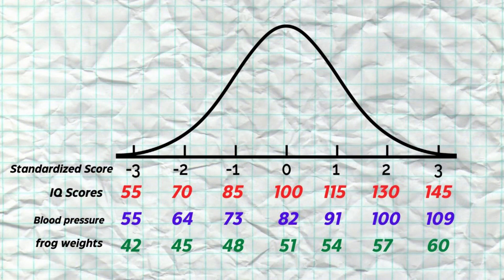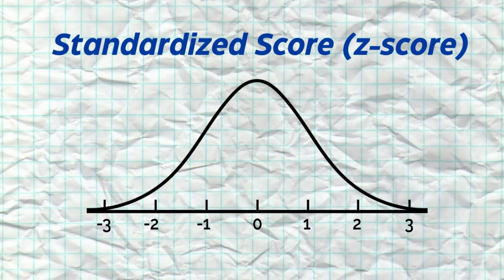Here we have one curve with IQ scores, men's diastolic blood pressure, and the weights of frogs all together. This curve is called the standard normal curve. It utilizes standardized scores, which again measure how many standard deviations a value is from the mean. All values can be put onto this curve as long as they are normalized or standardized.